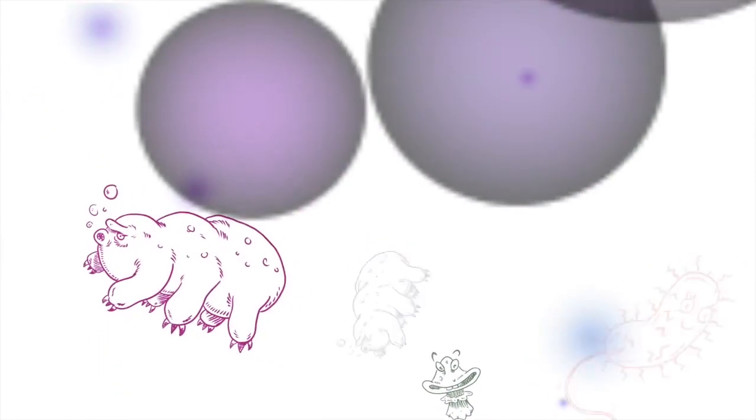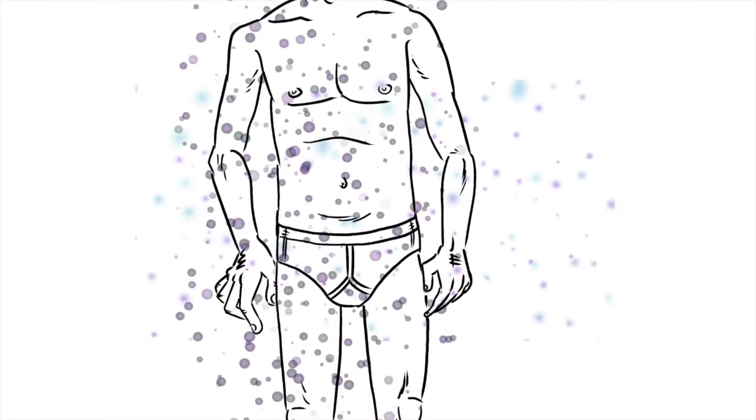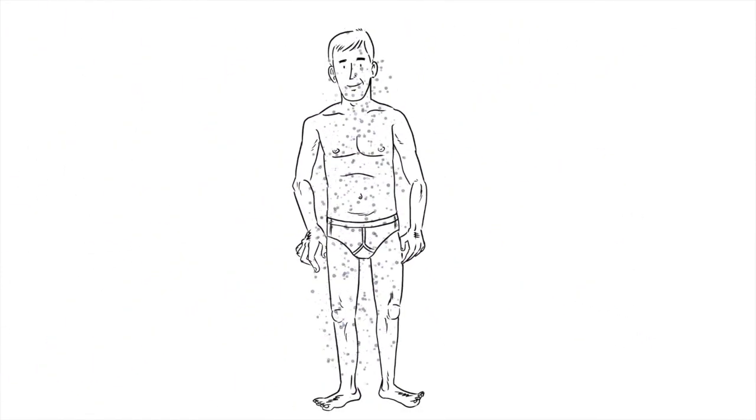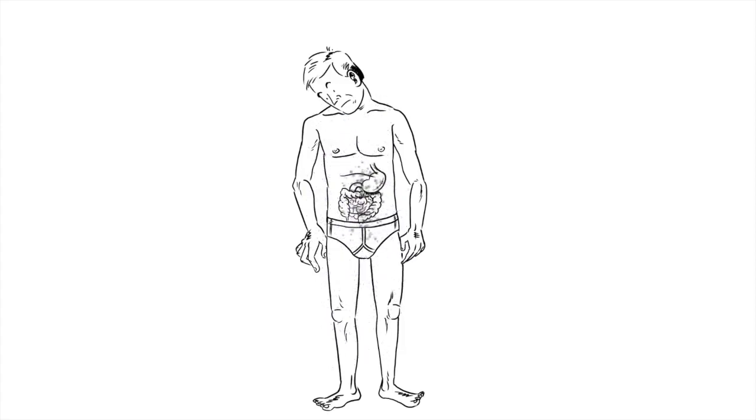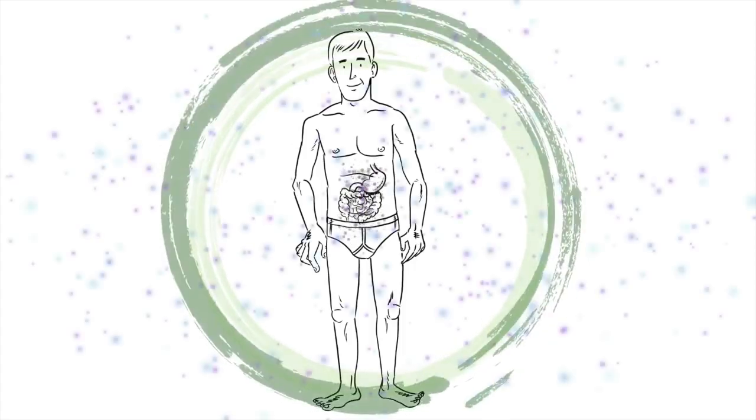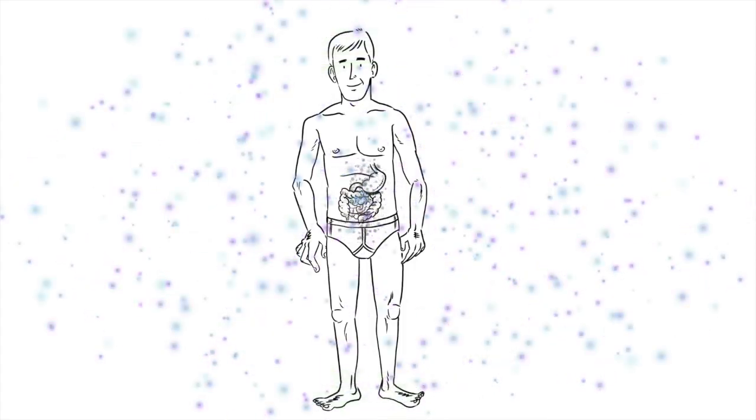These tiny organisms make up our microbiota, and most of them, about 95%, live in our gastrointestinal tract, more commonly known as our gut. And the combination of microbes, their genes, the environment they live in, and the stuff they produce, is called the human microbiome.